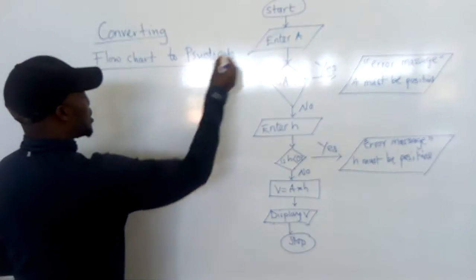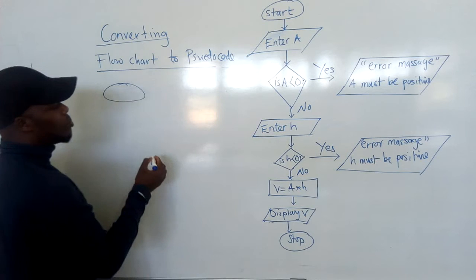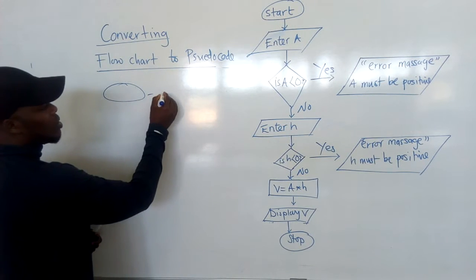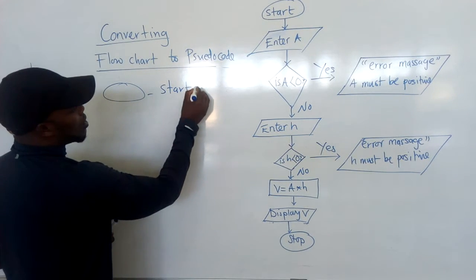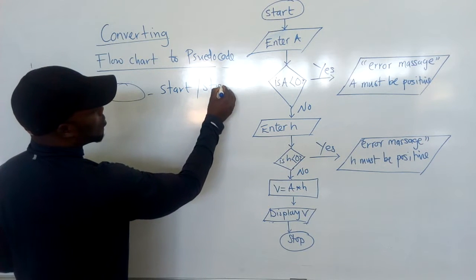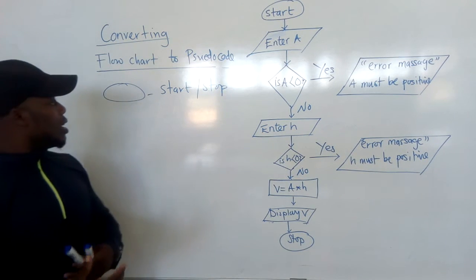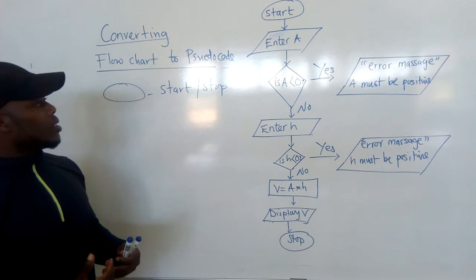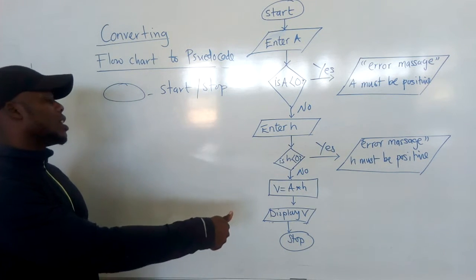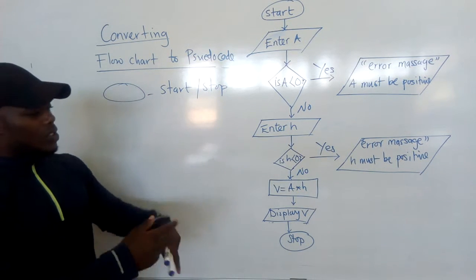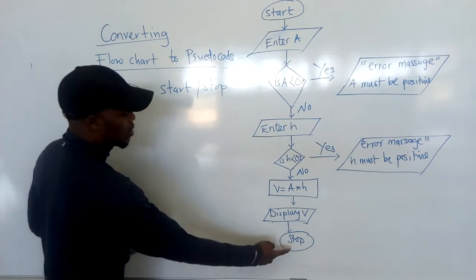The first shape we have here is an oval shape. What does this oval shape mean? It means start or stop. You know, when you have a computer, there is a start button — you need to press it to start. And then after using, you need to stop. So that's why there is start here and stop here.